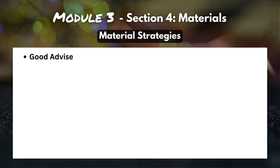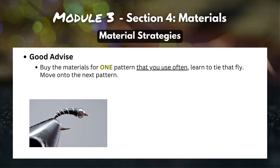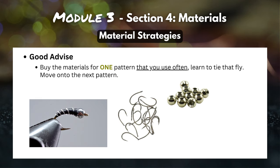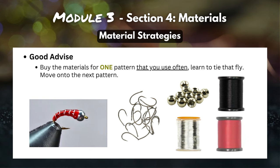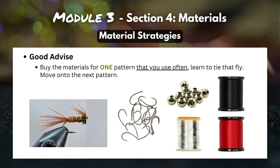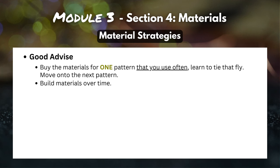The best advice we've heard from a number of different tiers — and one that we completely agree with — is to buy the materials for one pattern that you use often, learn to tie that fly, then move on to the next pattern. For example, I love the Zebra Midge. I use it all the time, it's a simple pattern, and it's great to have in my box. So I'll go out and grab the materials for that pattern: some hooks, some beads, some wire, and some thread. After I've filled up my box and learned to tie that pattern, I might choose a different color thread and make a bunch in red instead of black, or I might move on to a completely different pattern. As you follow this strategy, you're filling up your box with effective flies, catching fish on flies you've tied yourself, and building up your material collection pattern by pattern, material by material.